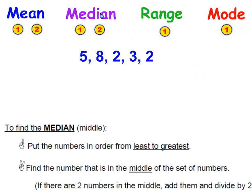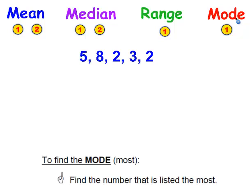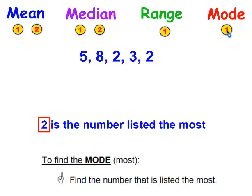Let's look at the median. To find the median, you're going to put these numbers in order from least to greatest. There they are from least to greatest, and you're going to find the number that's in the middle. In this case it's 3, so the median is 3. Now we're going to find the range: take the biggest number, which is 8, and subtract the smallest, which is 2 — so the range is 6. And to find the mode, the mode is the number listed the most, and in this set of numbers, 2 is the number listed the most.